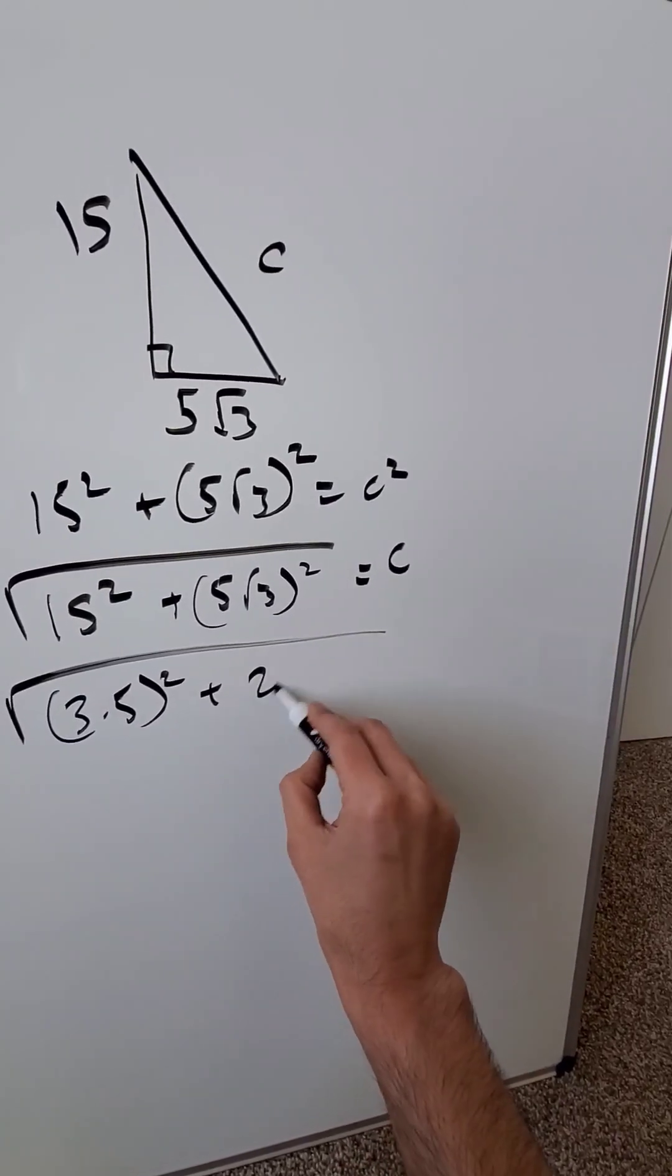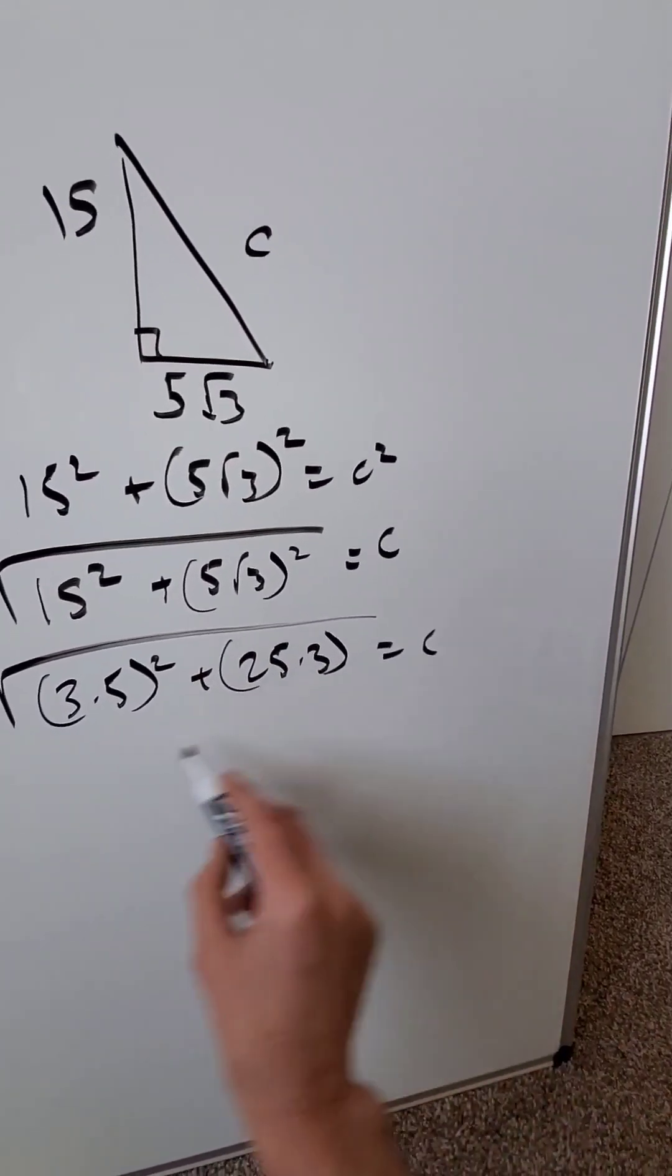Plus 5 root 3 whole squared, you know that's a 25 times 3, but I'll keep it in a parenthesis. Now look,